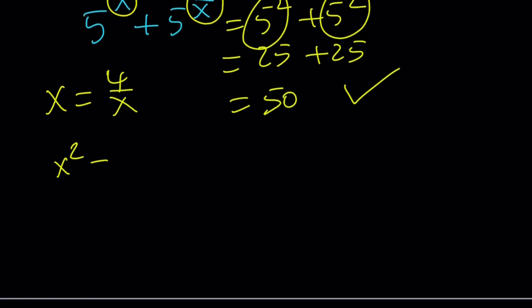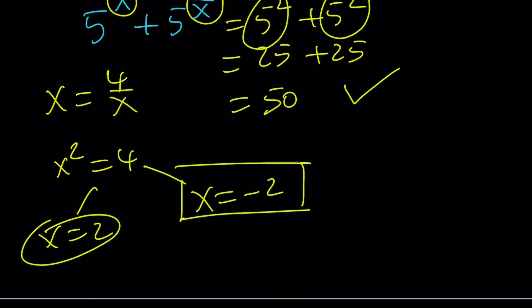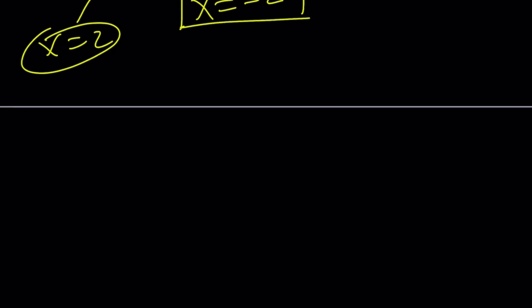From here we get something interesting. x squared equals 4, and this equation has two solutions. One of them is positive, we already got that, but the other one is negative. So can negative 2 be a valid solution too? Let's check it out.